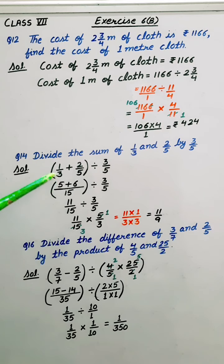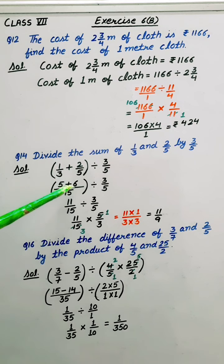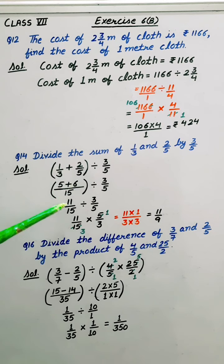So taking LCM 5 times 3 is 15. Here 3 times 5 is 5, 1 times 5 is 5. 5 times 3 is 3, 2 times 3 is 6. Adding them 11 upon 15 divided by 3 by 5.